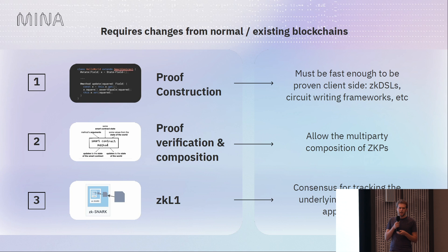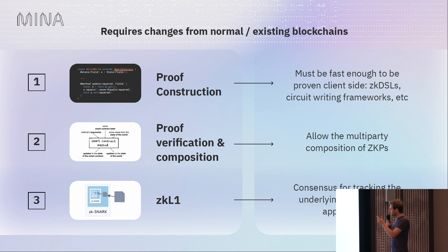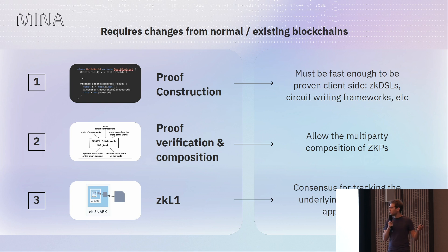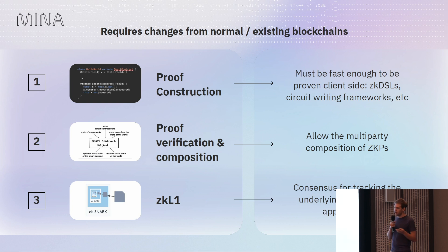Lastly, you need consensus over all this — I called it ZKL1, but really it can be any kind of consensus algorithm running over tracking the application of all of these zero-knowledge proofs. And what's interesting is that all of these layers affect each other. For example, the proofs you make are often much larger than normal transactions, so when you're designing your consensus layer you have to take that into account — if you want high throughput in a decentralized way, that's an extra challenge.